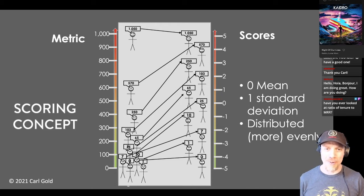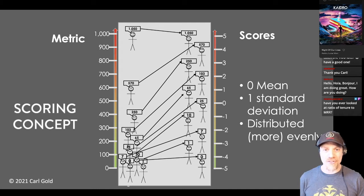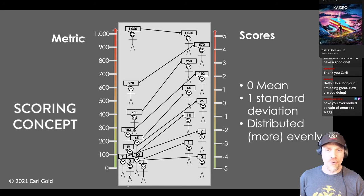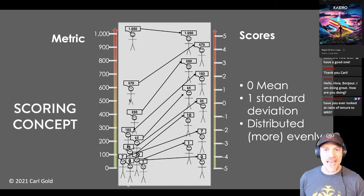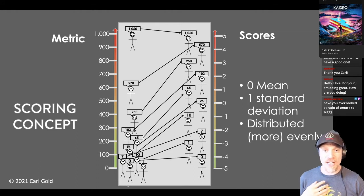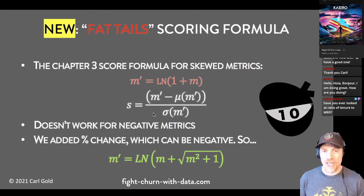How do we do this with a formula? This is my data ninja icon — when I put this on the slide, it means it's a data ninja move. The chapter three scoring approach: you add one to your metric — that's for count metrics where they can be zero, moving the minimum from zero to one because you're going to take the logarithm. You take the log (natural logarithm), which deals with skew and extreme outliers. Then you subtract the mean and divide by the standard deviation.